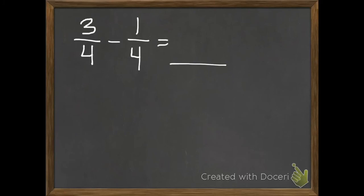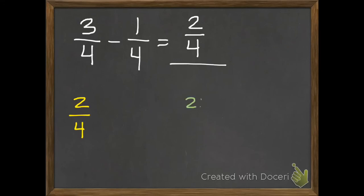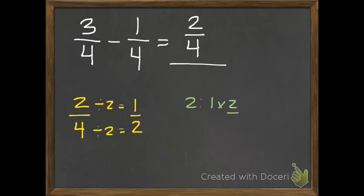One more to do along with me — this time subtraction. If we have 3 fourths and we subtract one of those fourths, how many fourths do we have left? We have 2 fourths. We want to make sure this is in simplest form. The factors of 2 are just 1 and 2. Can we divide both by 2? We can. 2 divided by 2 is 1, and 4 divided by 2 is 2. So the answer is 1 half.